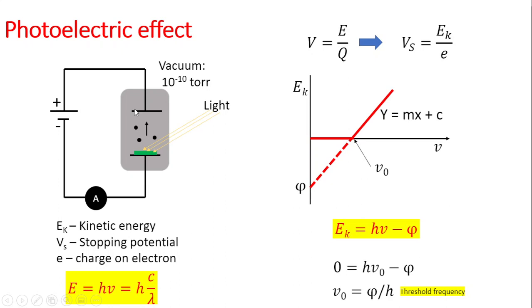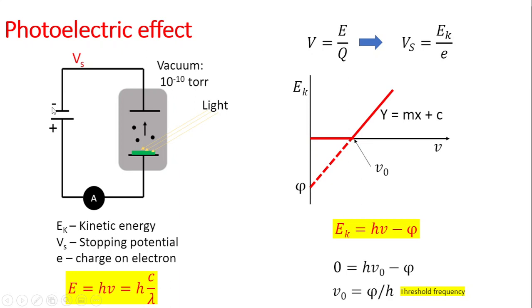In this circuit, once electrons are emitted, you can use a battery to apply a reverse voltage. The goal is to apply enough voltage to prevent any electrons from moving into the circuit. The voltage required to do this is called the stopping voltage.